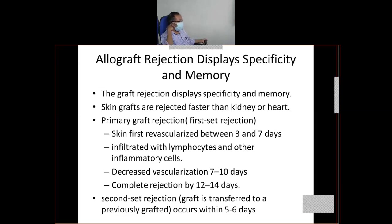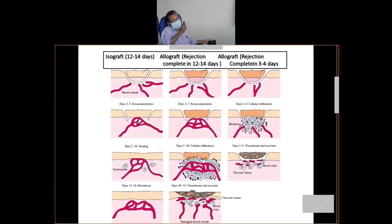Regarding rejection of an allograft — from one individual to another — the major issue is the different types of allograft rejection. When you transfer a graft from one individual, say autograft, usually after five to seven days there is vascularization. In the first column, acceptance of your isograft — say you are doing a skin graft, grafting skin to the recipient site. Within seven days there will be revascularization, blood vessels growing into the graft portion — the donor portion — and ultimately the graft survives.